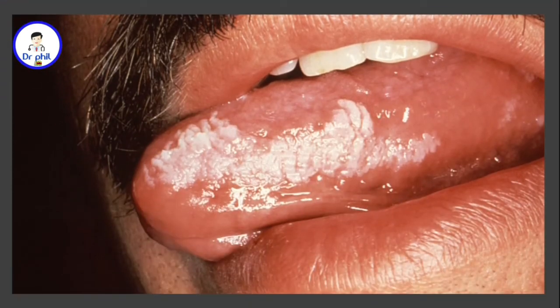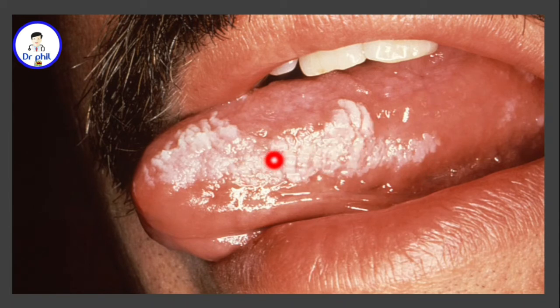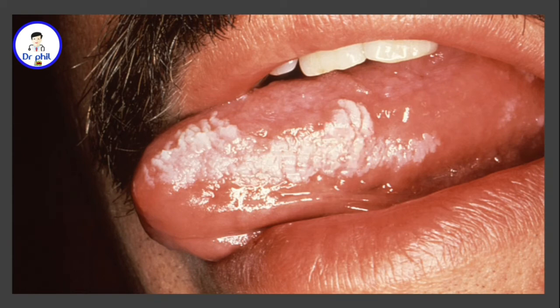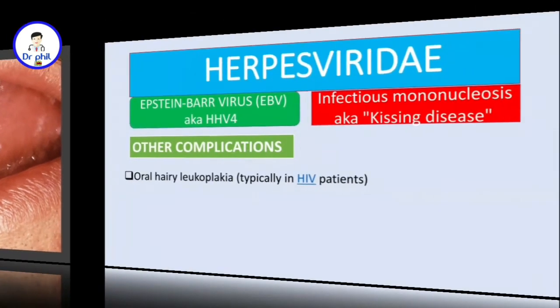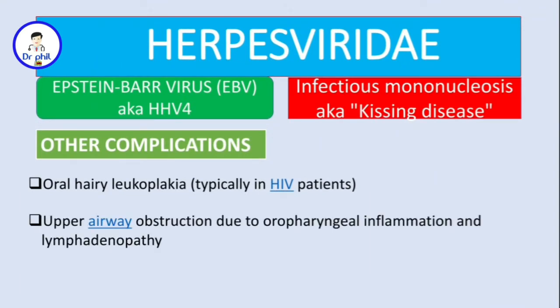Oral hairy leukoplakia can be mistaken for thrush caused by Candida, but the key difference is that oral hairy leukoplakia cannot be scraped off, unlike Candida thrush which can be scraped off. Another serious complication is upper airway obstruction due to oropharyngeal inflammation and lymphadenopathy.